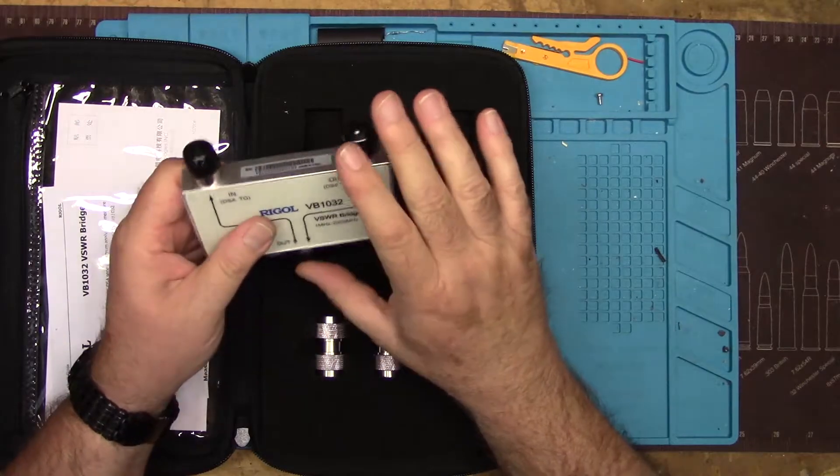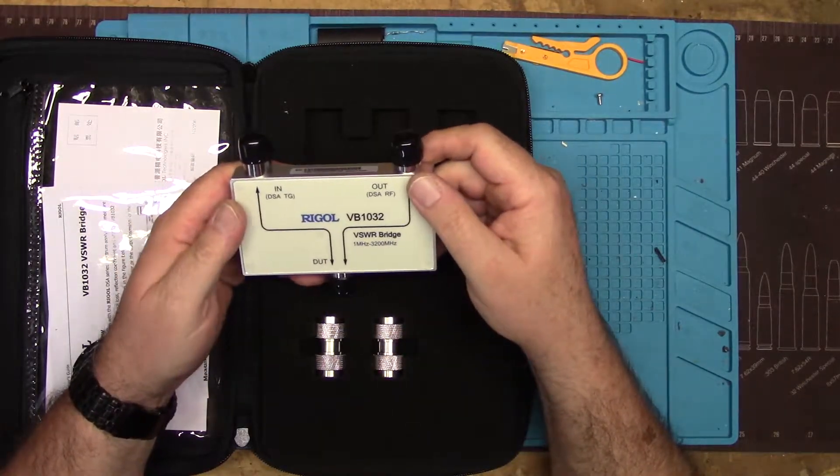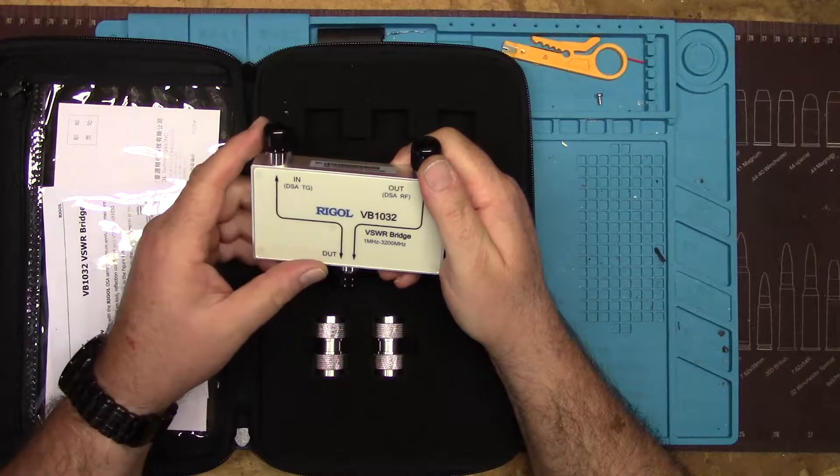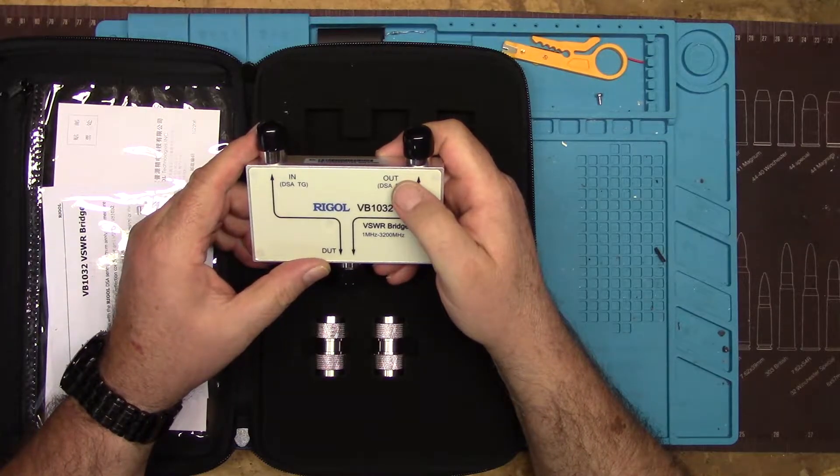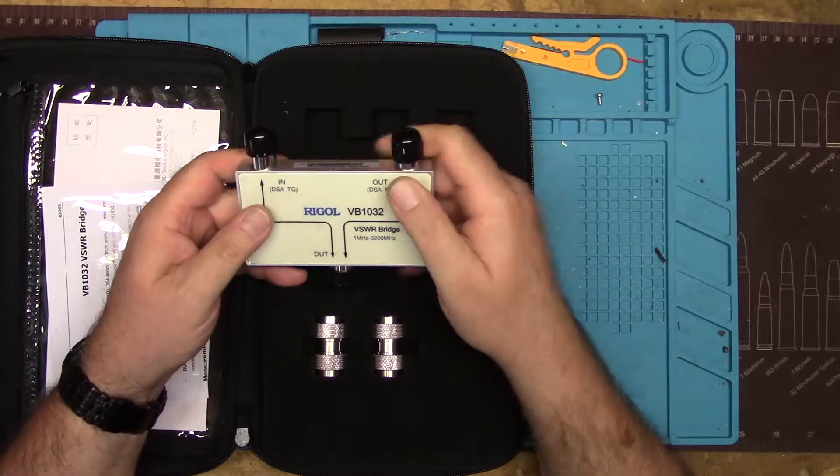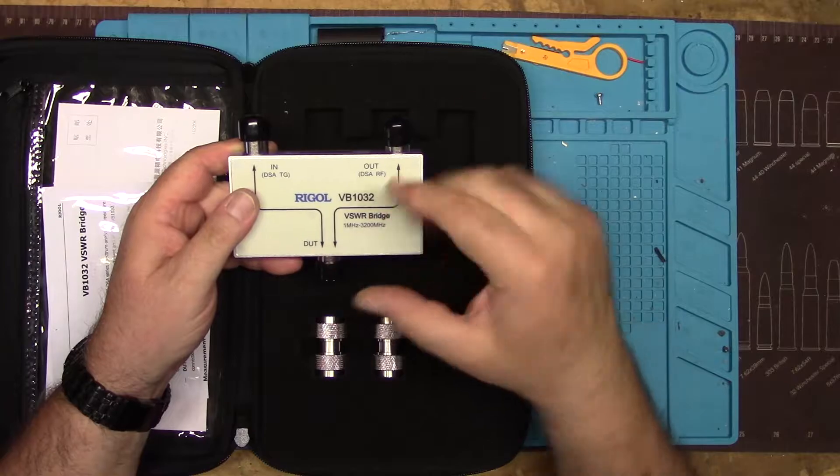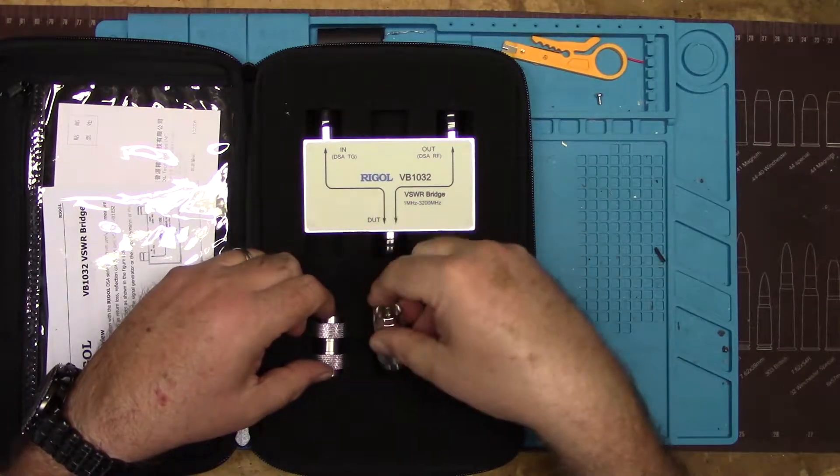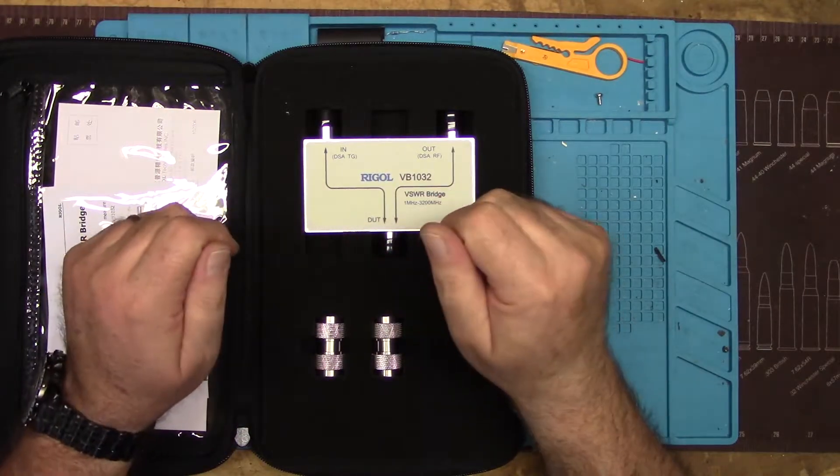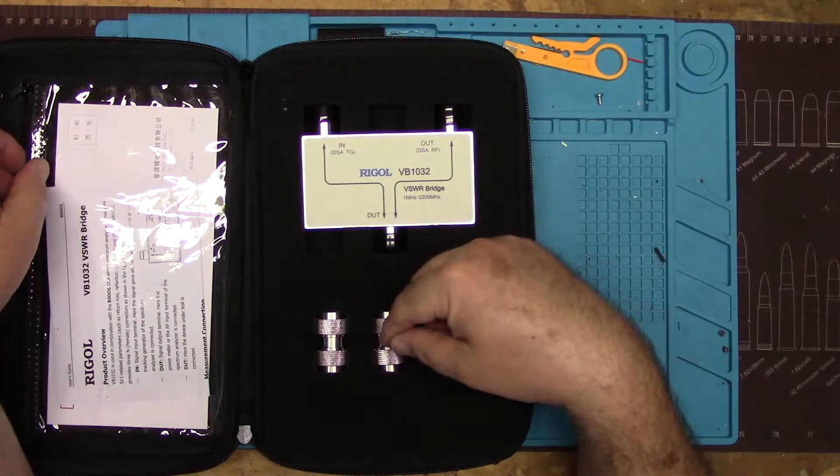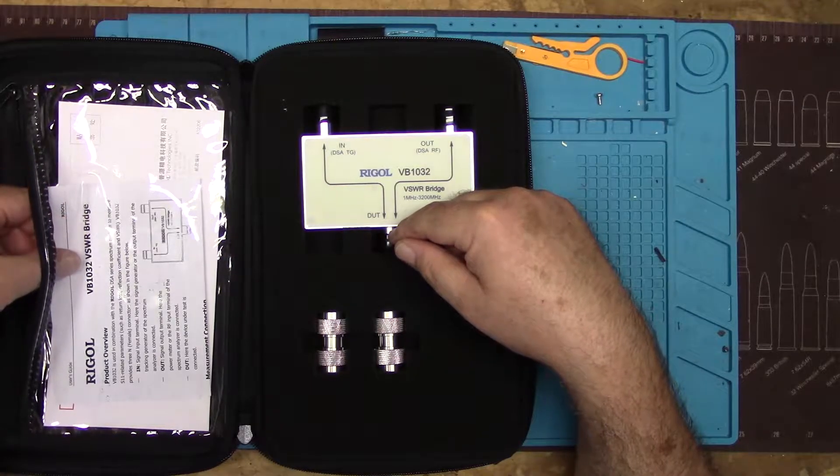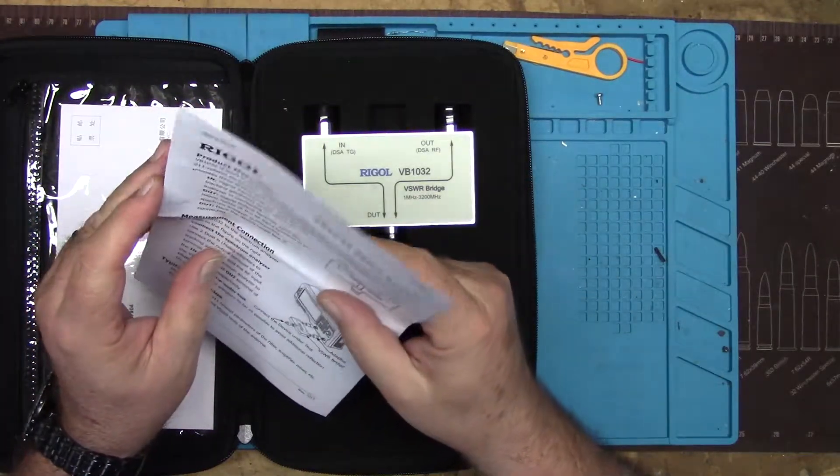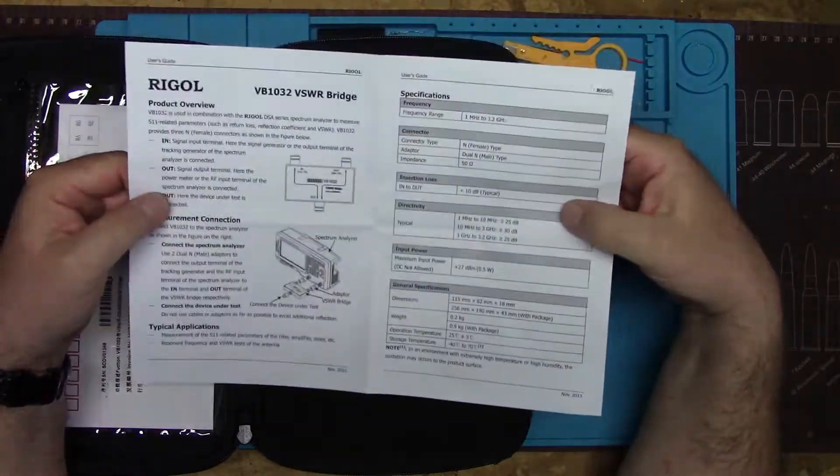This device has N-type connectors on all three connections. This is the input from your spectrum analyzer's tracking generator, this is the output that goes to the spectrum analyzer's RF input section, and this is the DUT or device under test. This comes with two double male end-to-end connectors. The spectrum analyzer uses N connectors on the chassis.